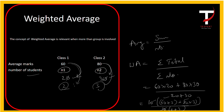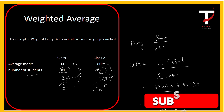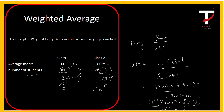For calculating weighted average, we don't need the exact total strength values. We can take the ratio of the group sizes — in this case 20 and 30 simplify to 2:3 — and use those ratios directly to calculate the weighted average, making the calculation simpler.